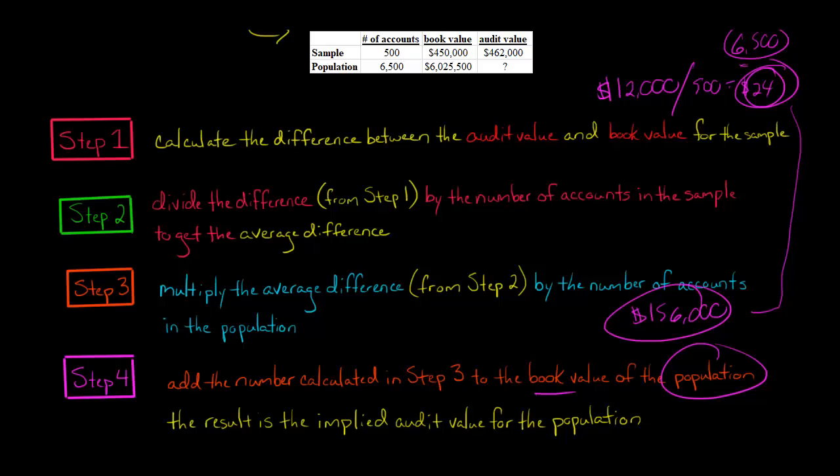Book value of our population is $6,025,500, and we're going to add $156,000. That gives us a grand total of $6,181,500.